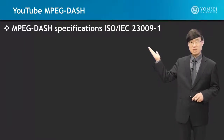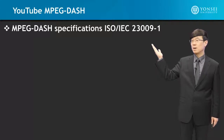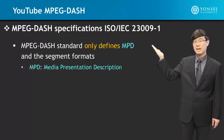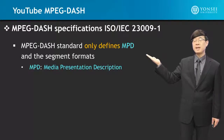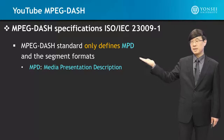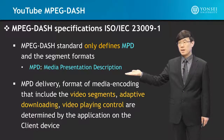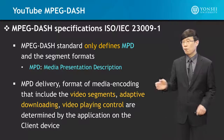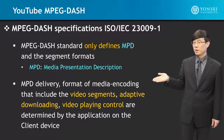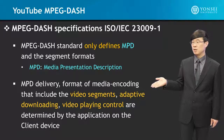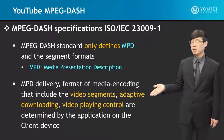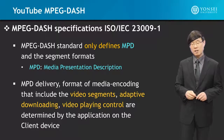MPEG-DASH specifications are based upon ISO/IEC 23009-1. The MPEG-DASH standards only define the MPD and the segment formats. The MPD is the media presentation description. The MPD delivery, format of media encoding, video segments, adaptive downloading, and video playing control are all determined by the application on the client device.